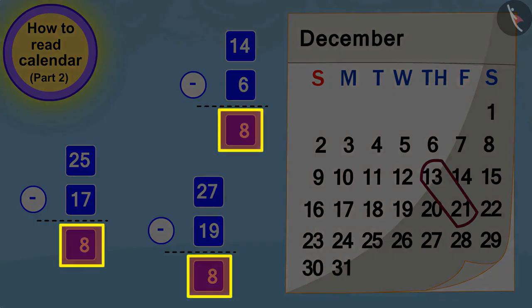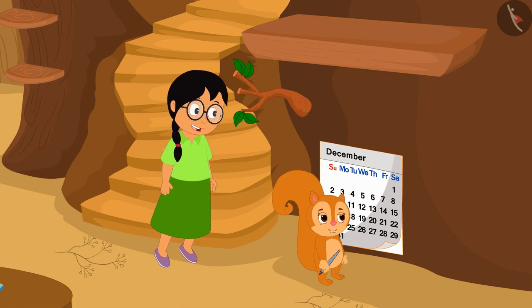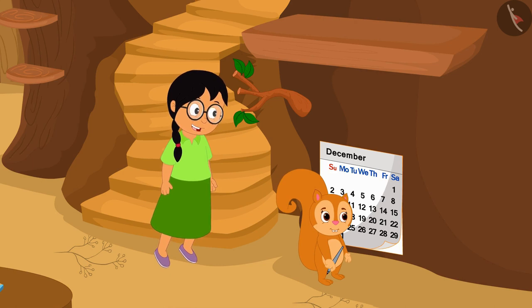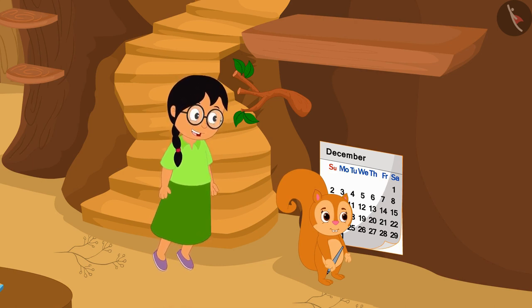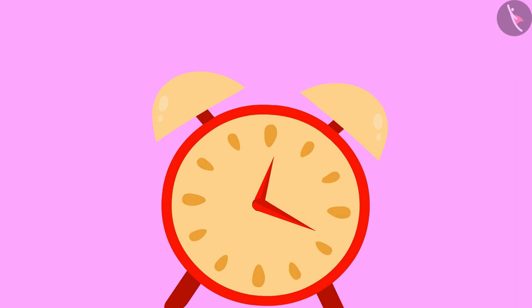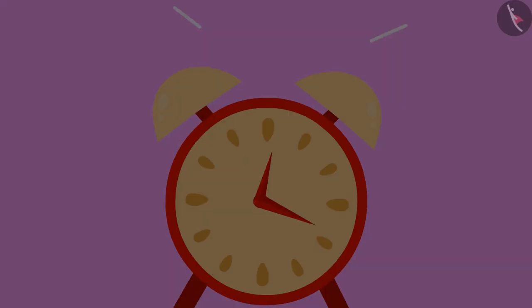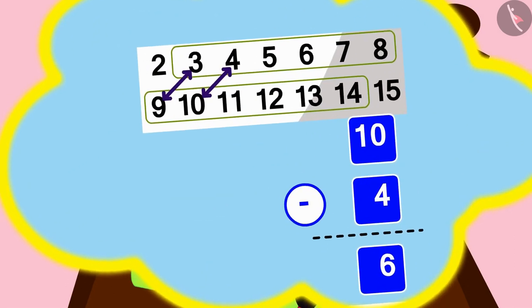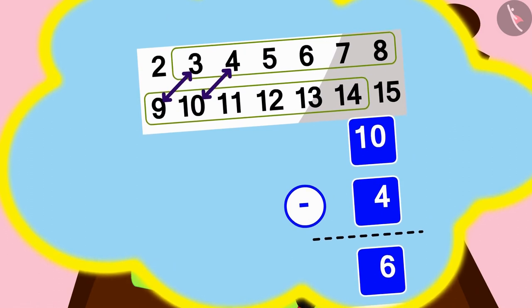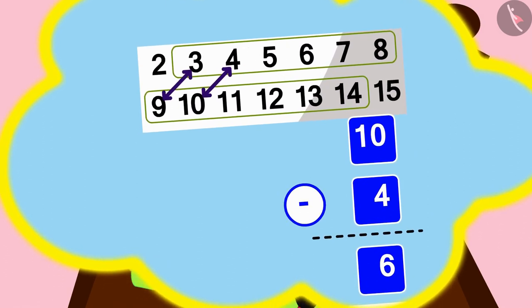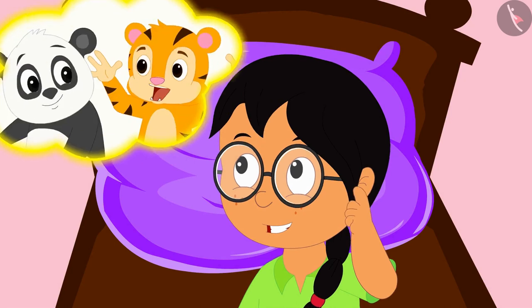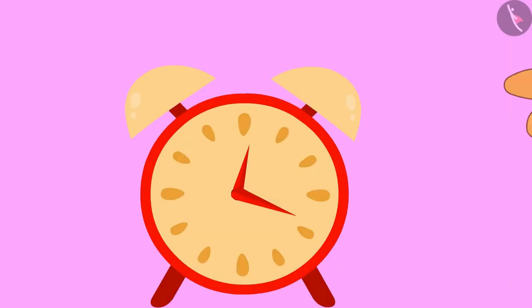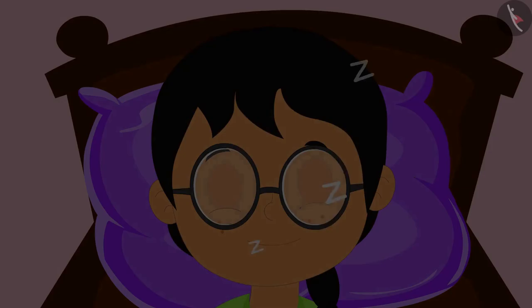Minu became even happier on seeing this calendar pattern. She started dancing happily. Just then her alarm started ringing and she woke up from her dream. But Minu still remembered the magic of the calendar she had seen in her dream. She decided to show that magic to her friends the next day, and switched off her alarm and went off to sleep again.